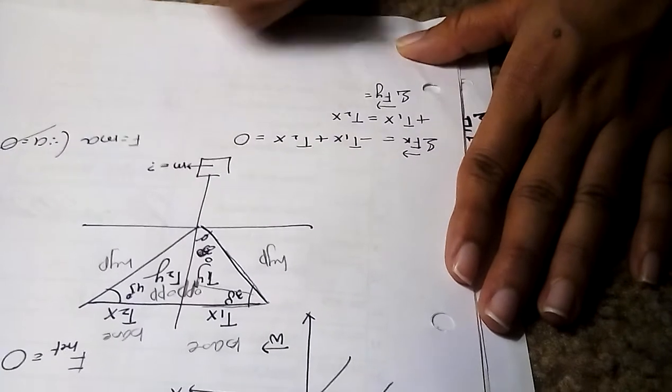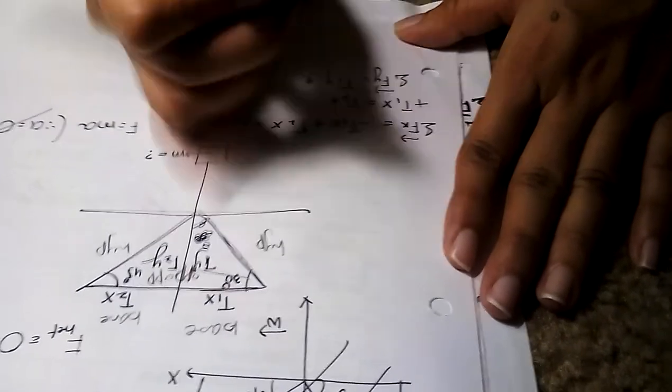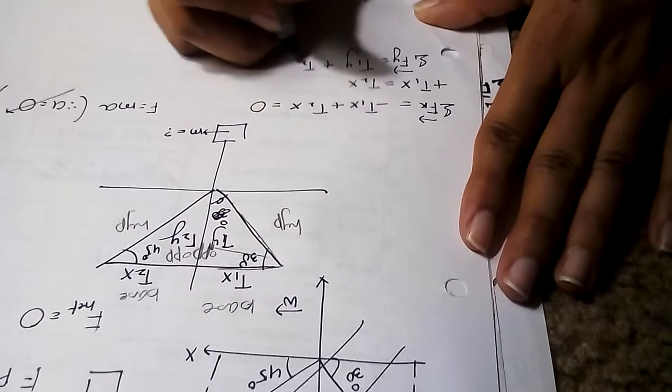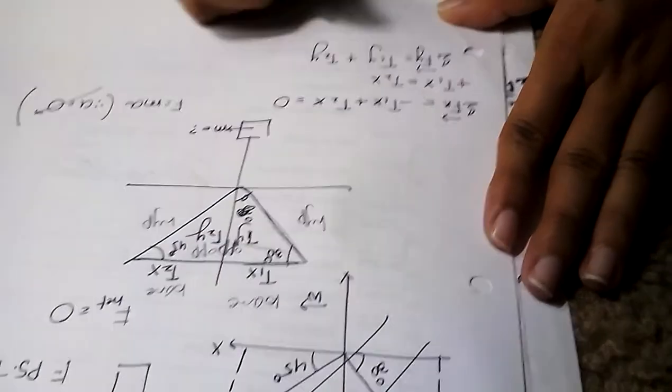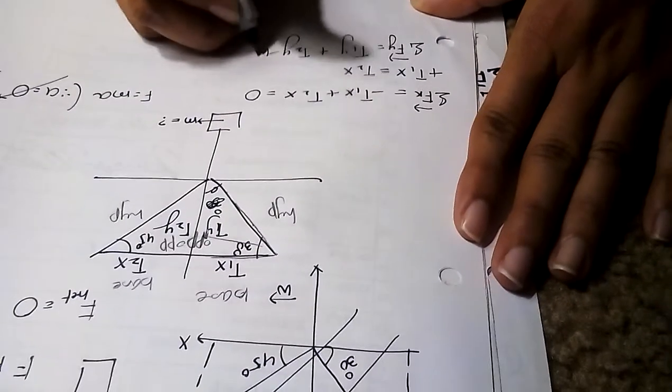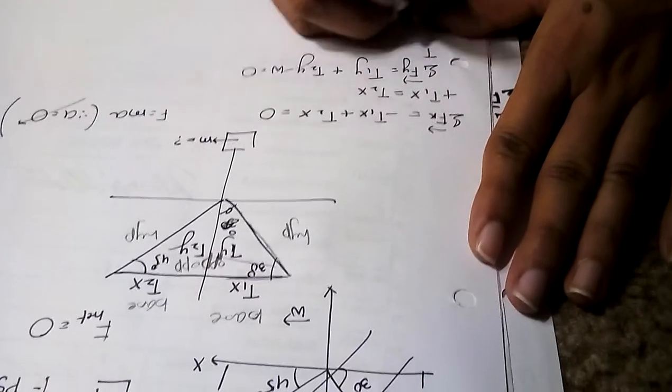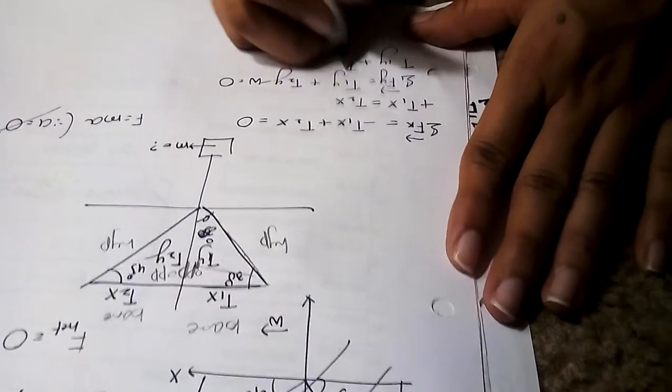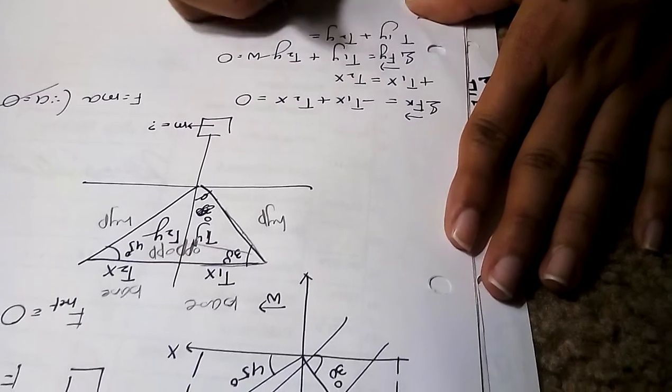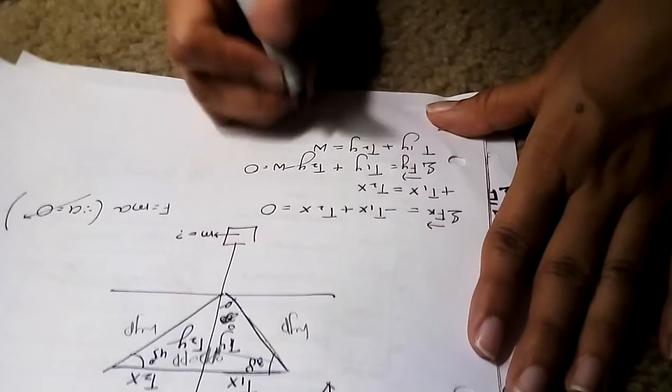So positive t1x, I just flip it on the other direction, equals t2x. Okay, let's sum up all the forces on the y direction: t1y plus t2y, they're all in the positive direction, minus w since it's pulling downwards.